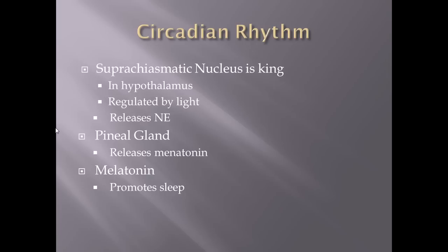Circadian rhythm is determined by your suprachiasmatic nucleus, which I've indicated as the king here. It's located in your hypothalamus. The environment regulates your suprachiasmatic nucleus — when it's light during the day and dark at night, that creates your circadian rhythm. This causes your hypothalamus, specifically this nucleus, to release norepinephrine, which acts upon the pineal gland. The pineal gland then releases melatonin, developing a cycle of norepinephrine release each night, so by 10, 11, or 12 at night you get tired and melatonin promotes sleep.